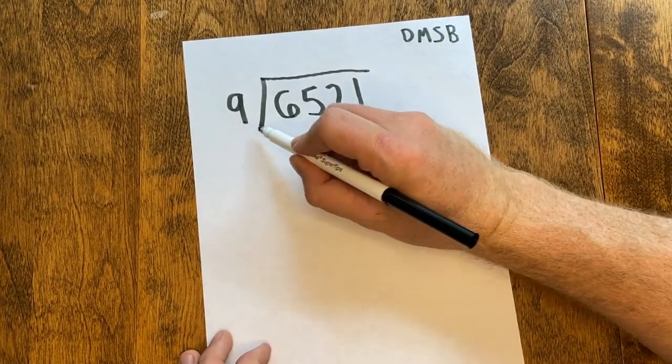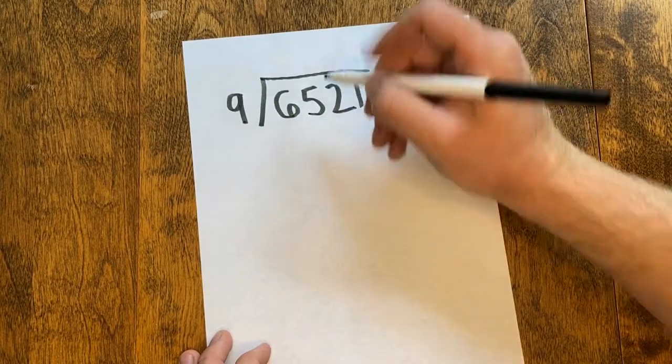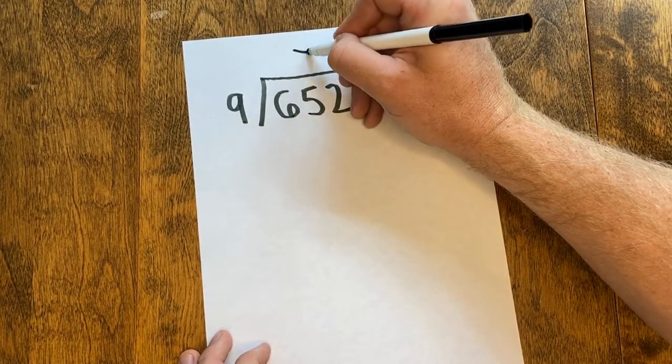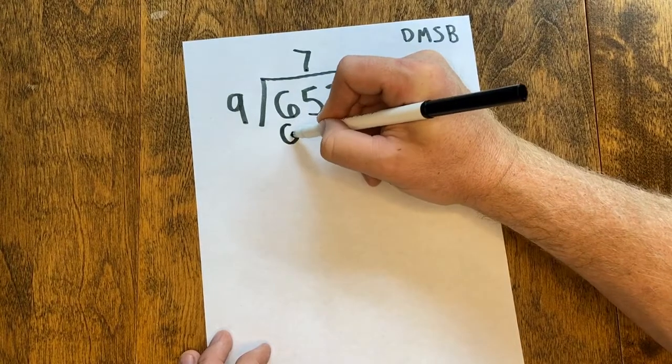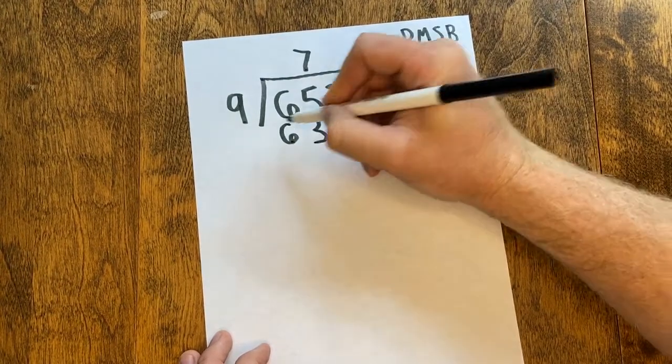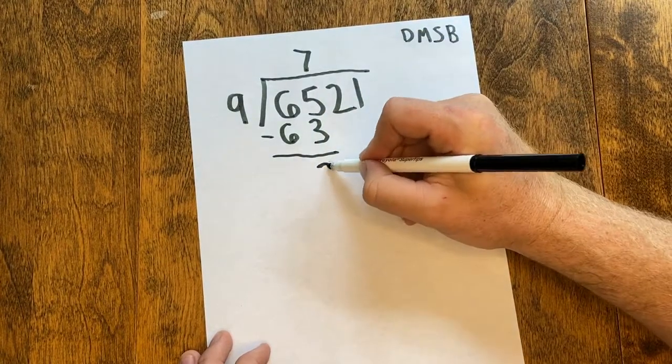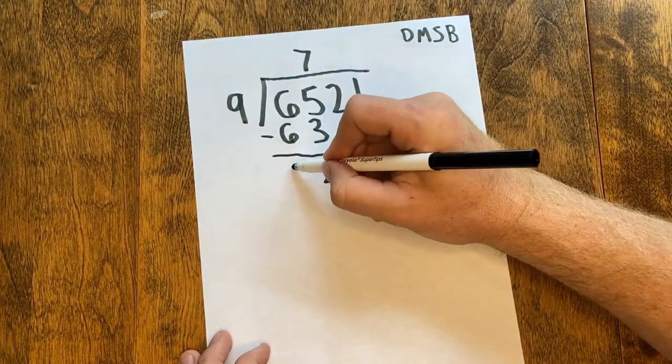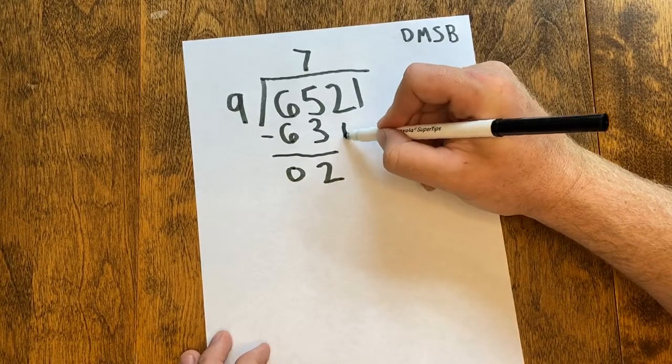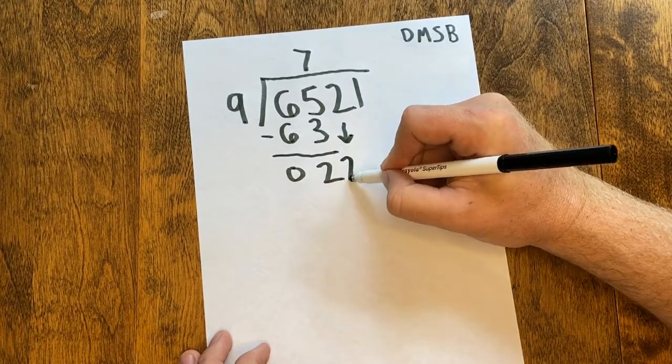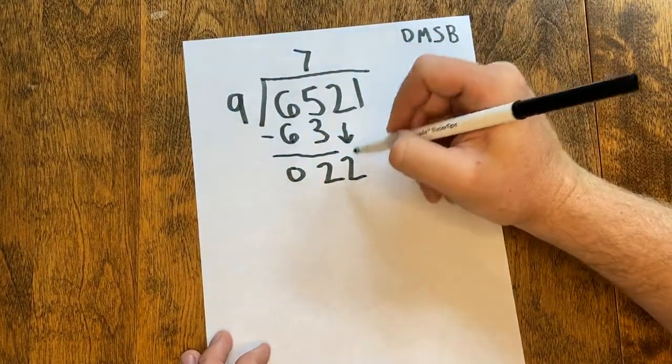9 cannot go into 6. 9 goes into 65 seven times. 7 times 9 is 63. 65 minus 63, I do 5 minus 3 is 2, 6 minus 6 is 0, and I bring down my 2 and begin the steps again.